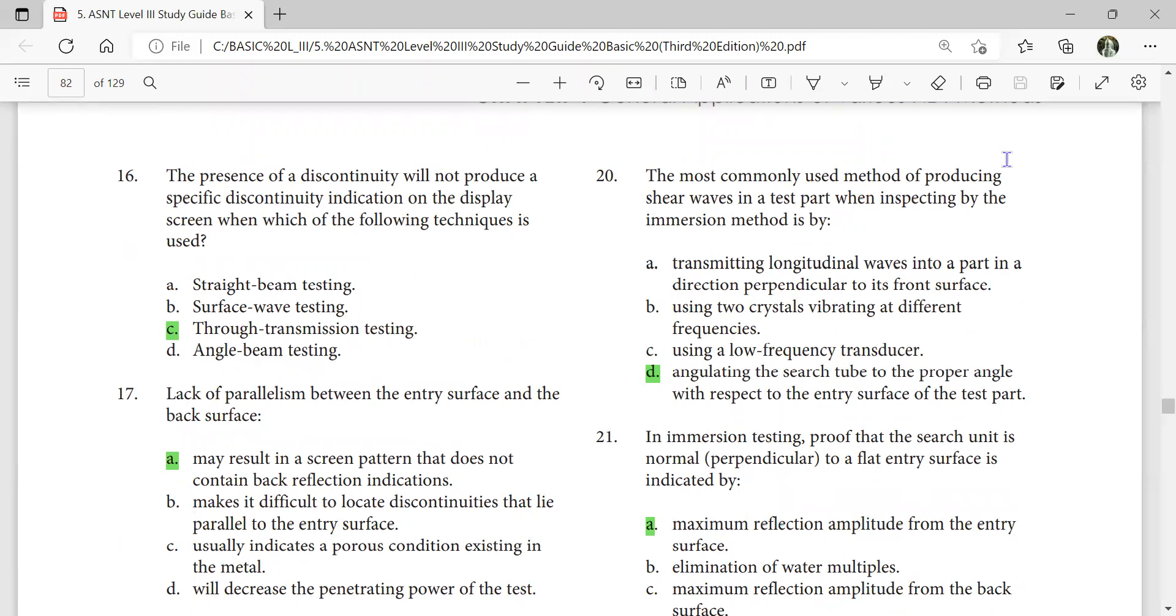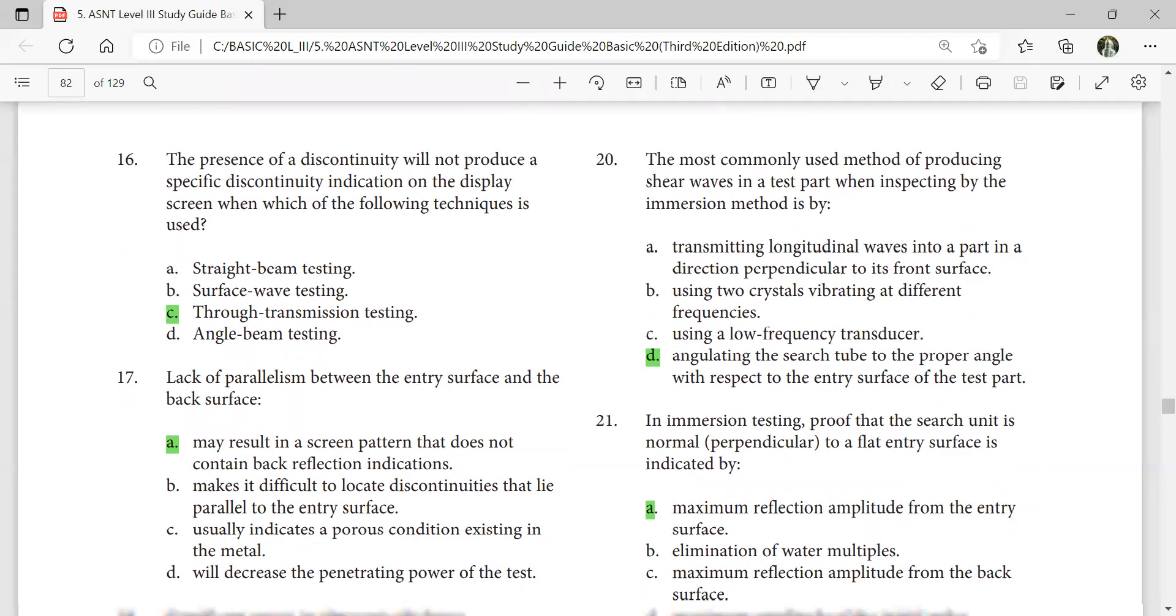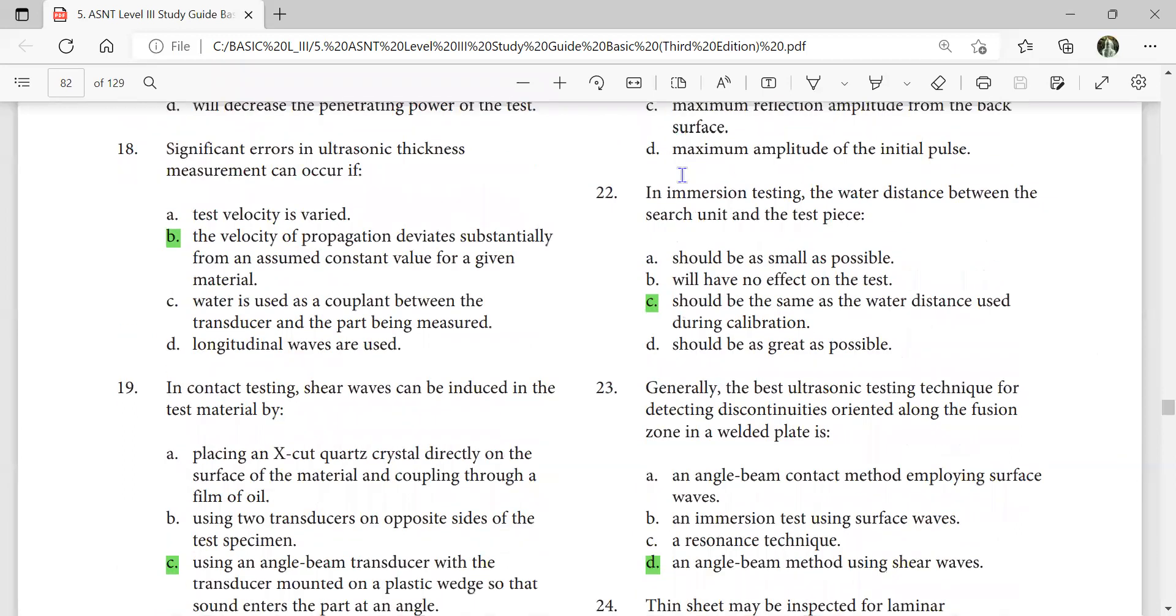The most commonly used method for producing shear waves in a test part when inspecting by the immersion method is by angulating the search tube to the proper angle with respect to the entry surface. In immersion testing, proof that the search unit is normal to the flat entry surface is indicated by maximum reflection amplitude from the entry surface. The water distance from the search unit and the test piece should be the same as the water distance used during calibration.